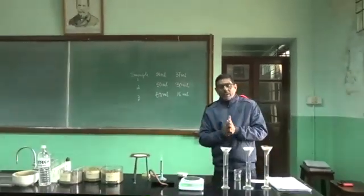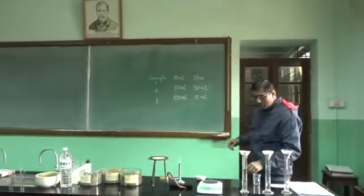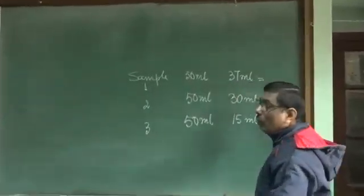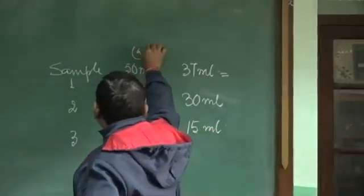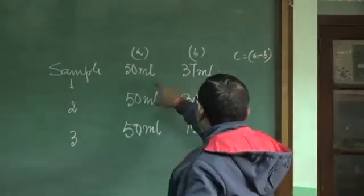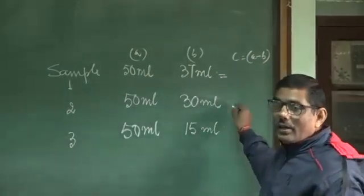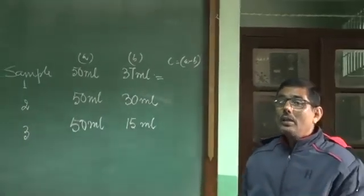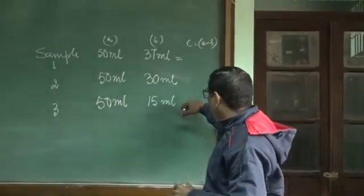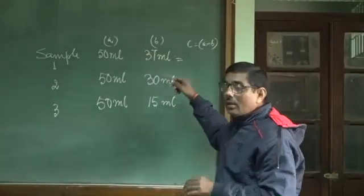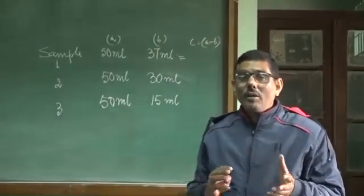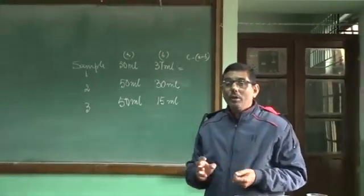You can now say which one has retained more water. If 37 ml came out, then 50 minus 37 is the amount of water retained. So if A is the water added and B is the water collected, then C equals A minus B — that is the water retained. If most of the water has gone through, that means it is a sandy soil. If a lot of water has been retained, that means it is a clay soil. After this, you can find out what type of crops can be grown in each type of soil.